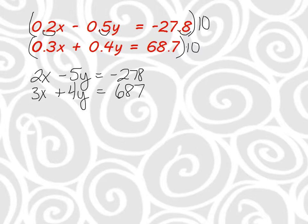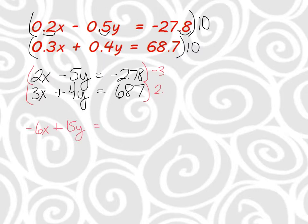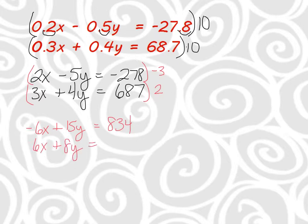Now I'll try to get one of my variables to drop. I'm going to work on the x's this time. What do 2 and 3 both go into? 6. So I want one to be positive 6 and one to be negative 6. To make that happen, I'll take the top times negative 3 and the bottom times 2. That gives me negative 6x plus 15y equals negative 834. On the bottom equation, taking everything times 2 gives 6x plus 8y equals 1374.